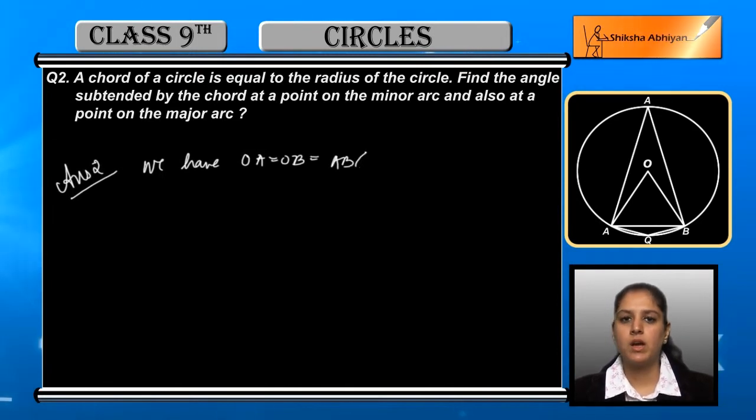If we look at triangle OAB, triangle OAB is an equilateral triangle.